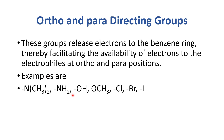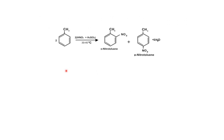Some examples of ortho and para directors are chlorine, bromine, iodine, and alkyl groups. For instance, when you introduce a methyl group, it directs the incoming substituent to ortho and para positions. So the methyl group is basically an ortho and para director.